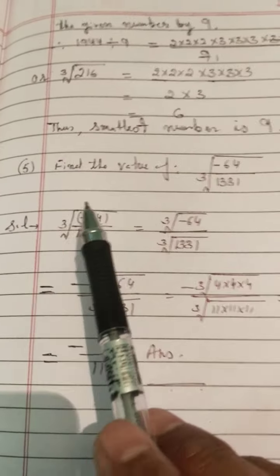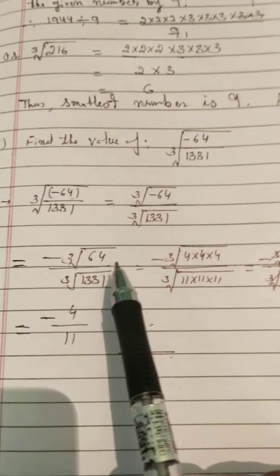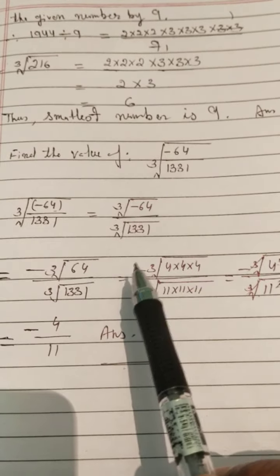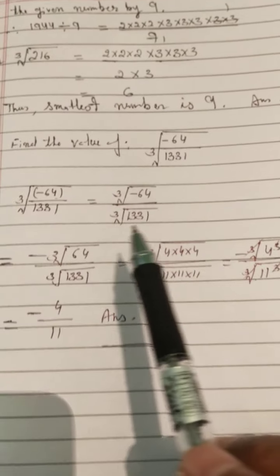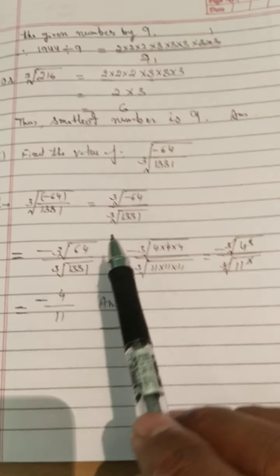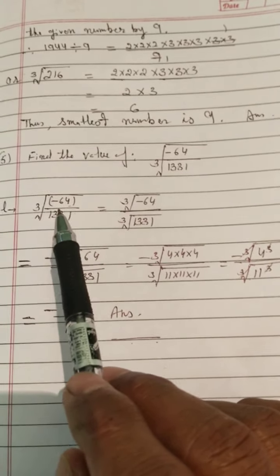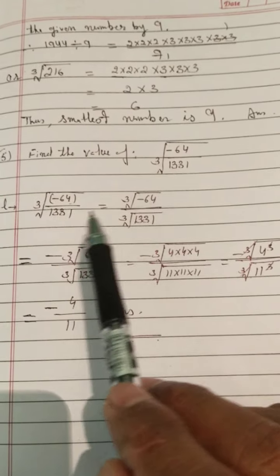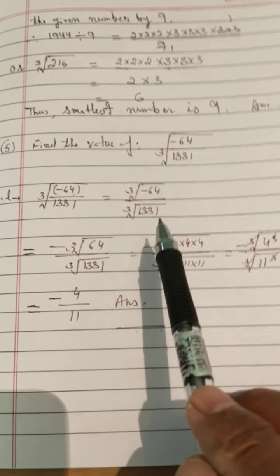Fifth question: find the value of the cube root of minus 64 upon 1,331. We know the cube root of 64 is 4 and the cube root of 1,331 is 11. So the answer is minus 4 upon 11. But in your answer sheet, you have to solve it step by step: cube root of minus 64 upon 1,331 — write the cube roots separately: cube root of minus 64 upon cube root of 1,331.